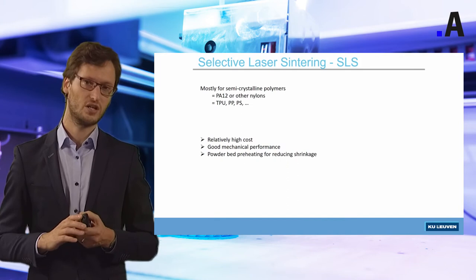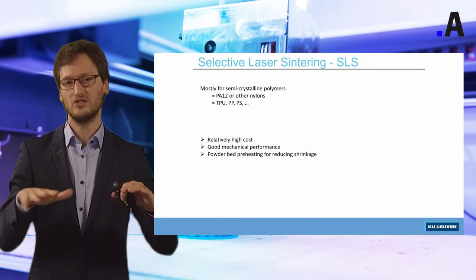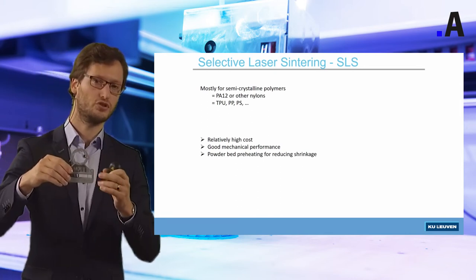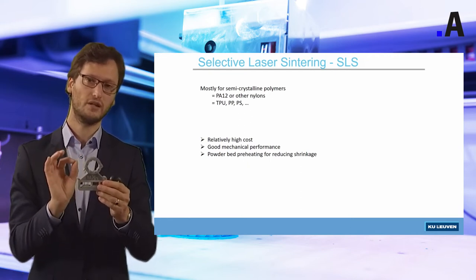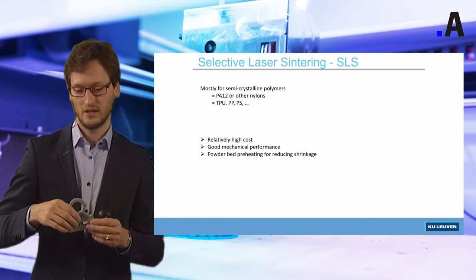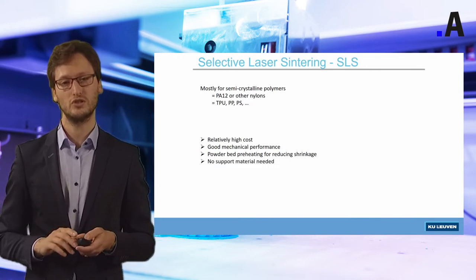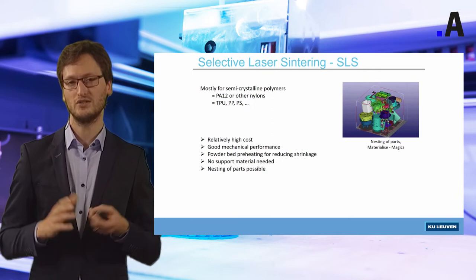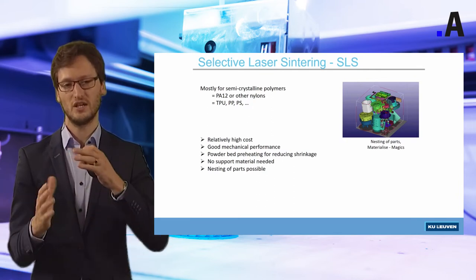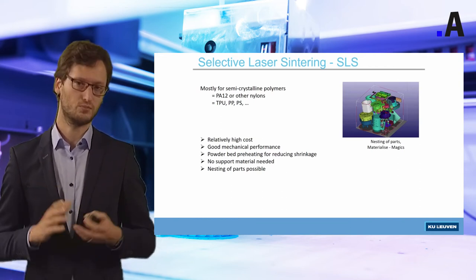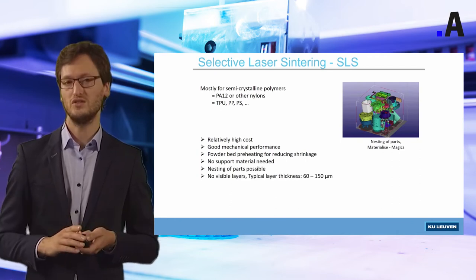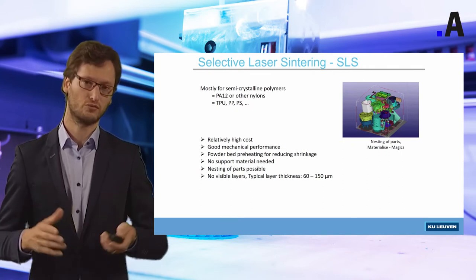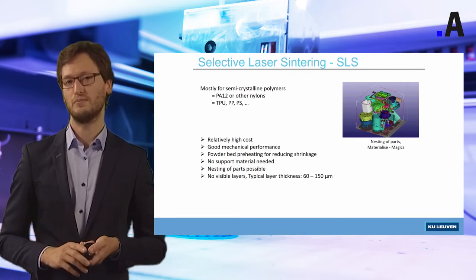In the machine, powder bed preheating is necessary to reduce shrinkage of the part after production. Before the laser interacts with the powder, the powder is already preheated and sintered slightly. This means that even for printing overhanging structures, we don't need to print support structures. We can also put many parts on top of each other in one print job — this is called nesting, as you can see in the top right of this slide. Layer thickness is between 60 to 150 micrometers, so layers are not very visible to the naked eye and surface quality is acceptable, though worse than stereolithography and a little better than FDM.